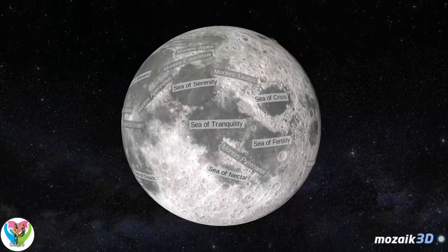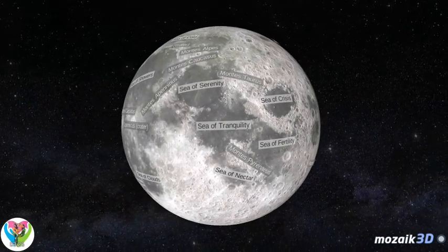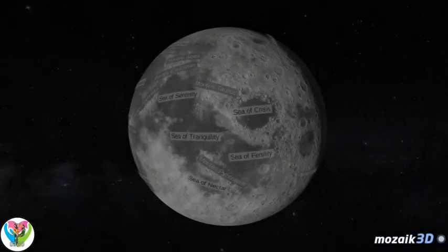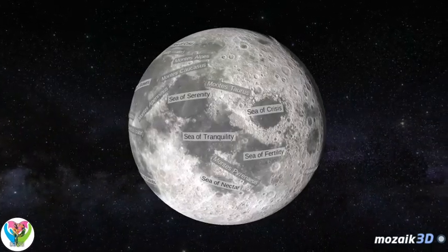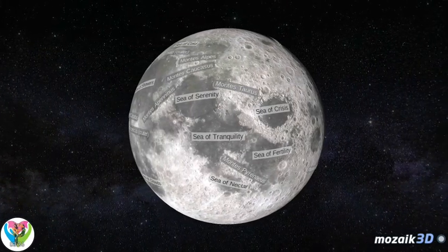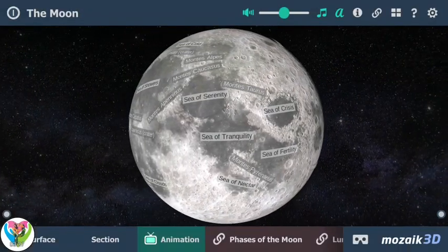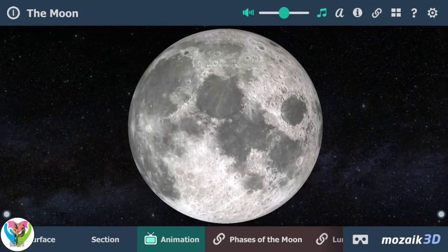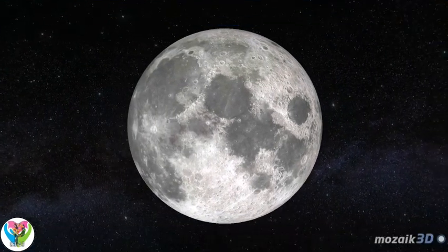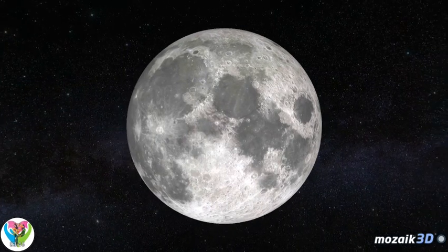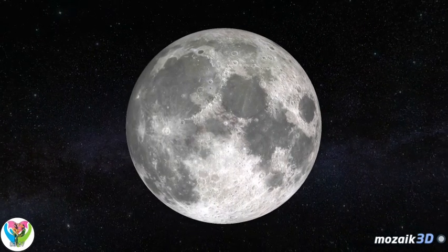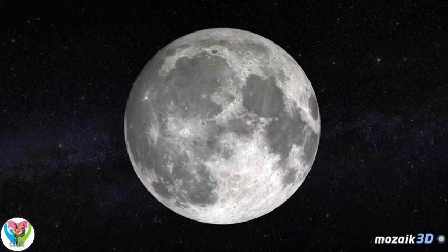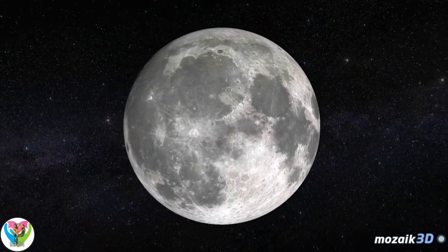Its surface is composed mainly of volcanic rocks, covered by a thick layer of debris. We can see darker, lower-lying basins, so-called seas, and lighter, higher plateaus on the Moon. The basins, with the mountains and craters ringing them, were created by gigantic meteorite impacts. However, the volcanic rock layer and craters created by geological processes prove that there also used to be active volcanoes on the Moon.